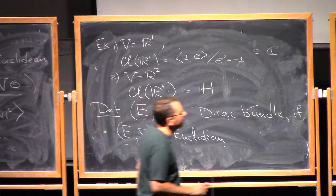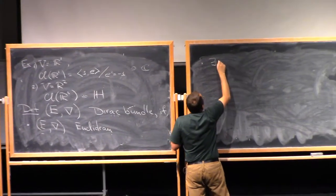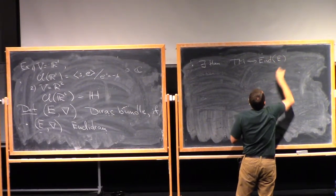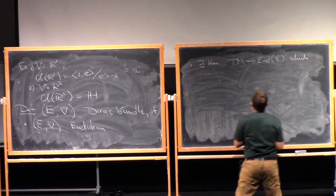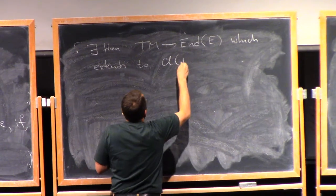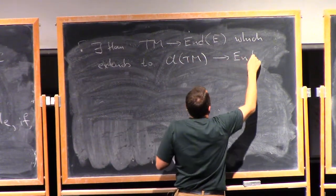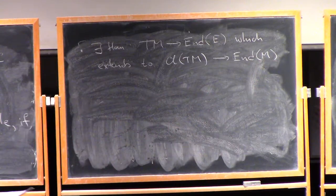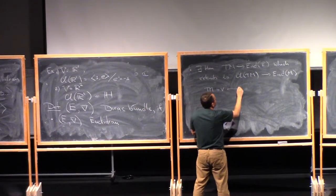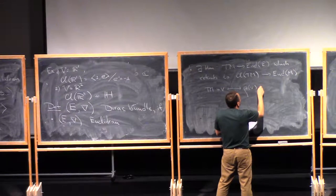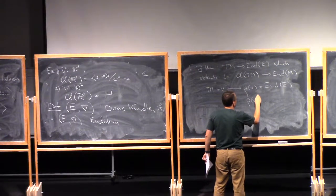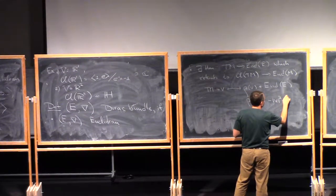And I also have a homomorphism from TM into the endomorphisms of E, which extends to the homomorphism of Algebras, so Clifford TM into the endomorphisms of M. Now, what this actually means is that whenever I have a tangent vector V in TM, so M maps to, say, rho of V in the endomorphisms of E, and the requirement is that rho of V squared is minus norm of V squared times the identity.